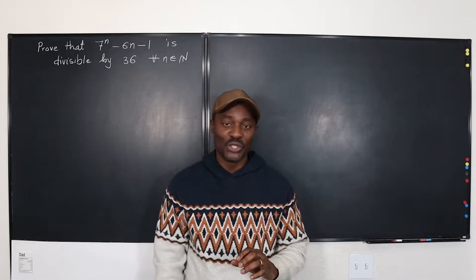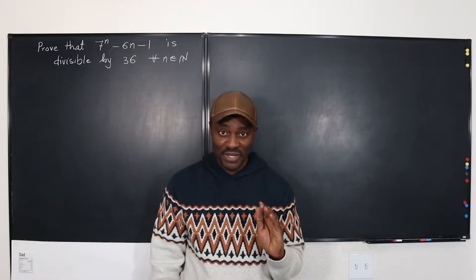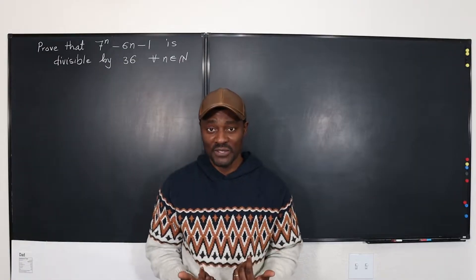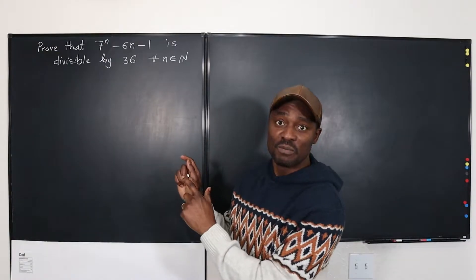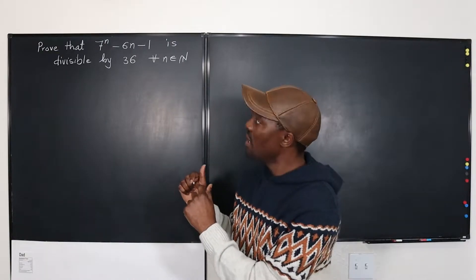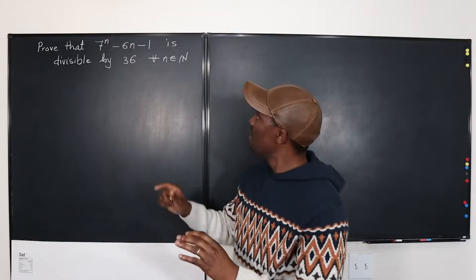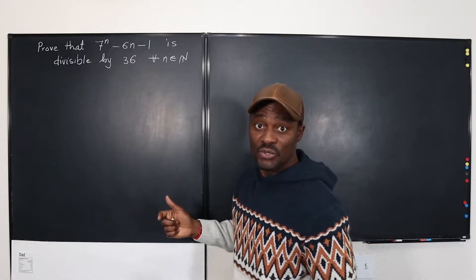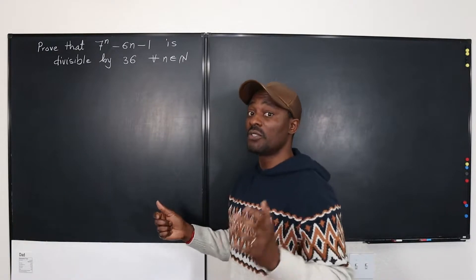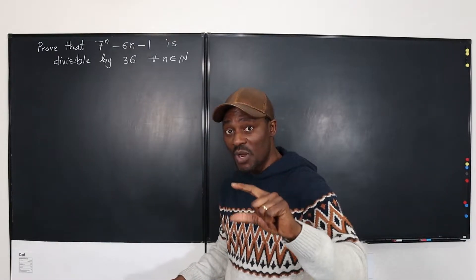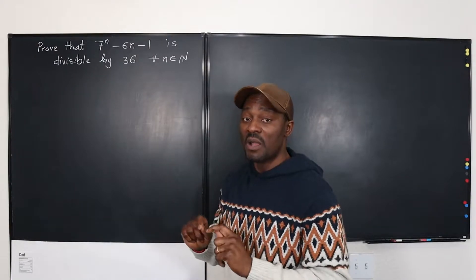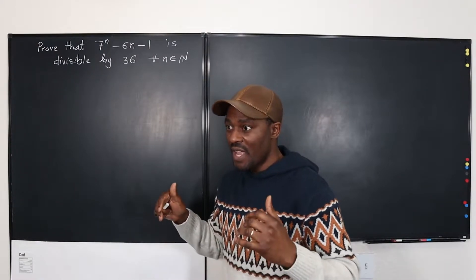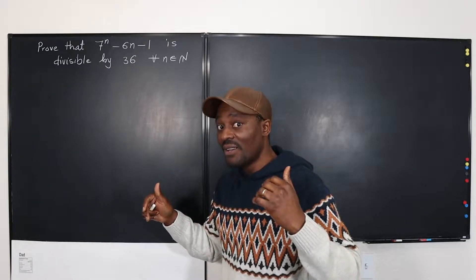Welcome to another video. I'm going to use this video to show you the four essential steps you need to take whenever you're doing mathematical induction. The problem I have right now is to prove that 7 raised to power n minus 6n minus 1 is divisible by 36 for all n in the set of natural numbers — counting from 1, 2, 3, and so on — the answer will always be divisible by 36.